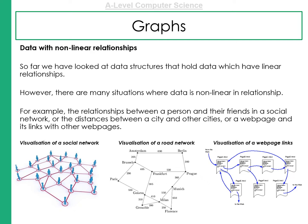We've looked at data structures so far that have linear relationships. Think about arrays. For example, the relationship between a person and their friends within a social network, or the distances between a city and other cities, or a webpage and all the links on its webpages. These are examples of graphs.